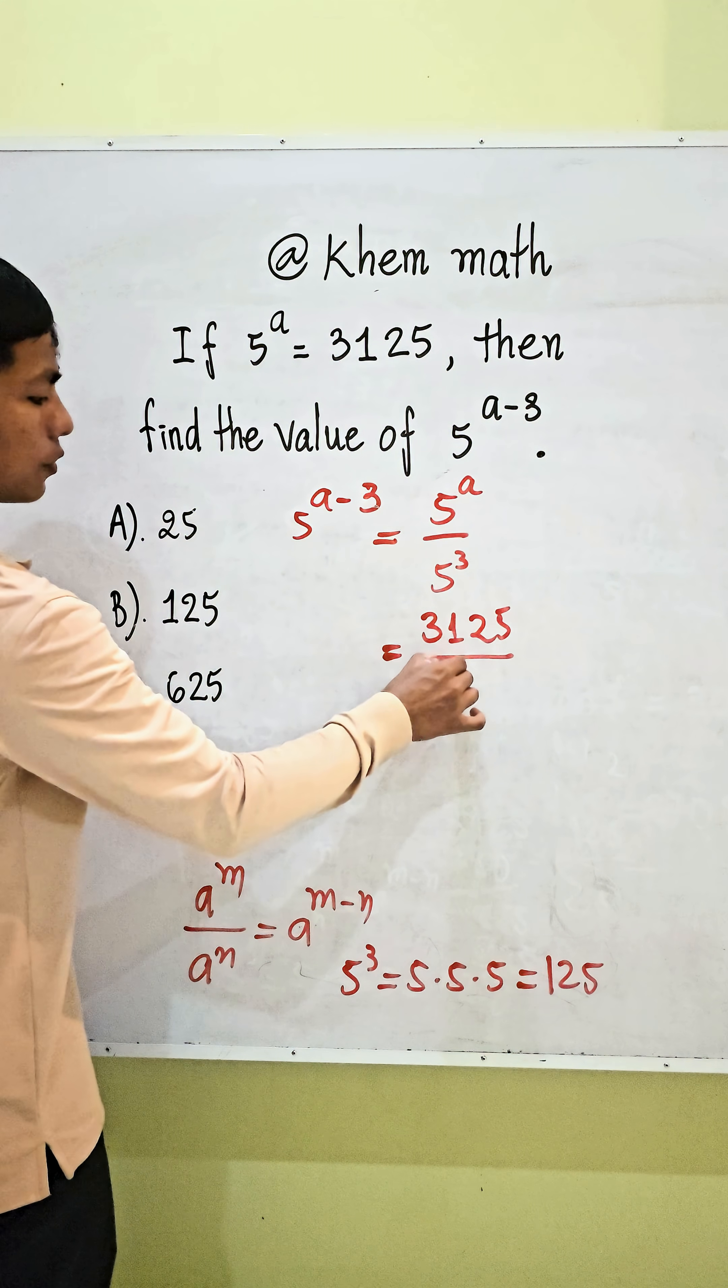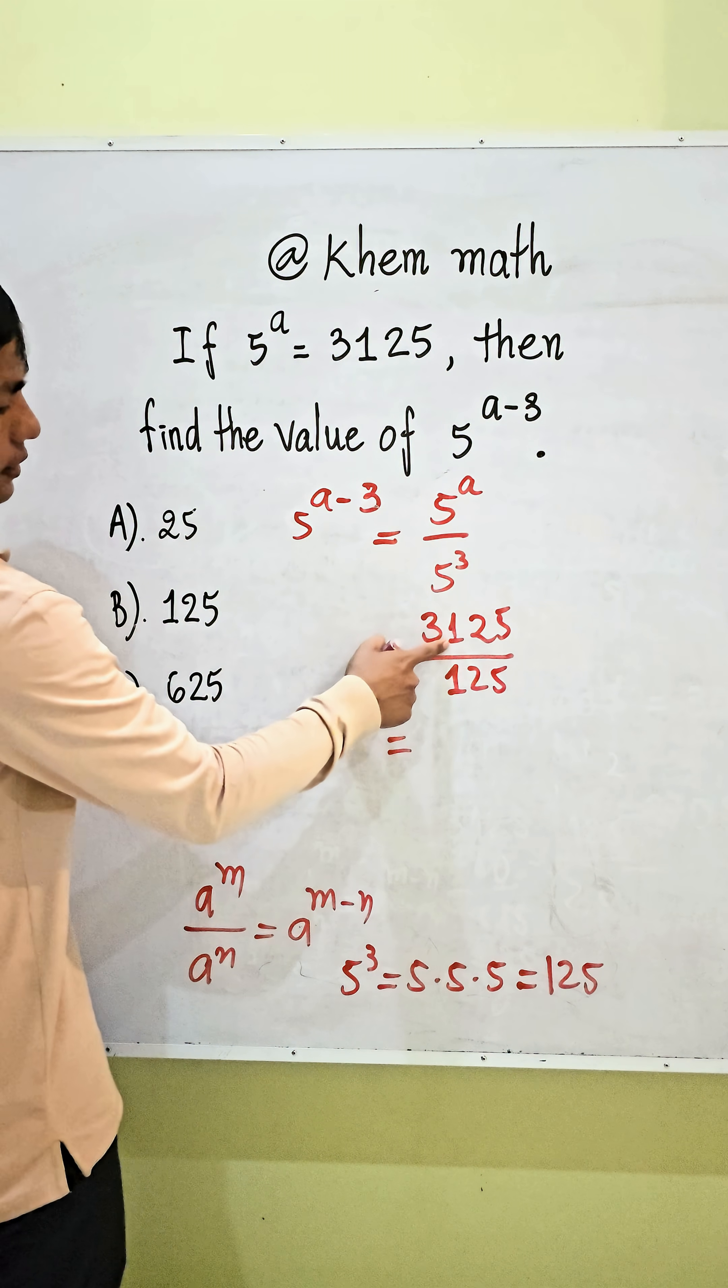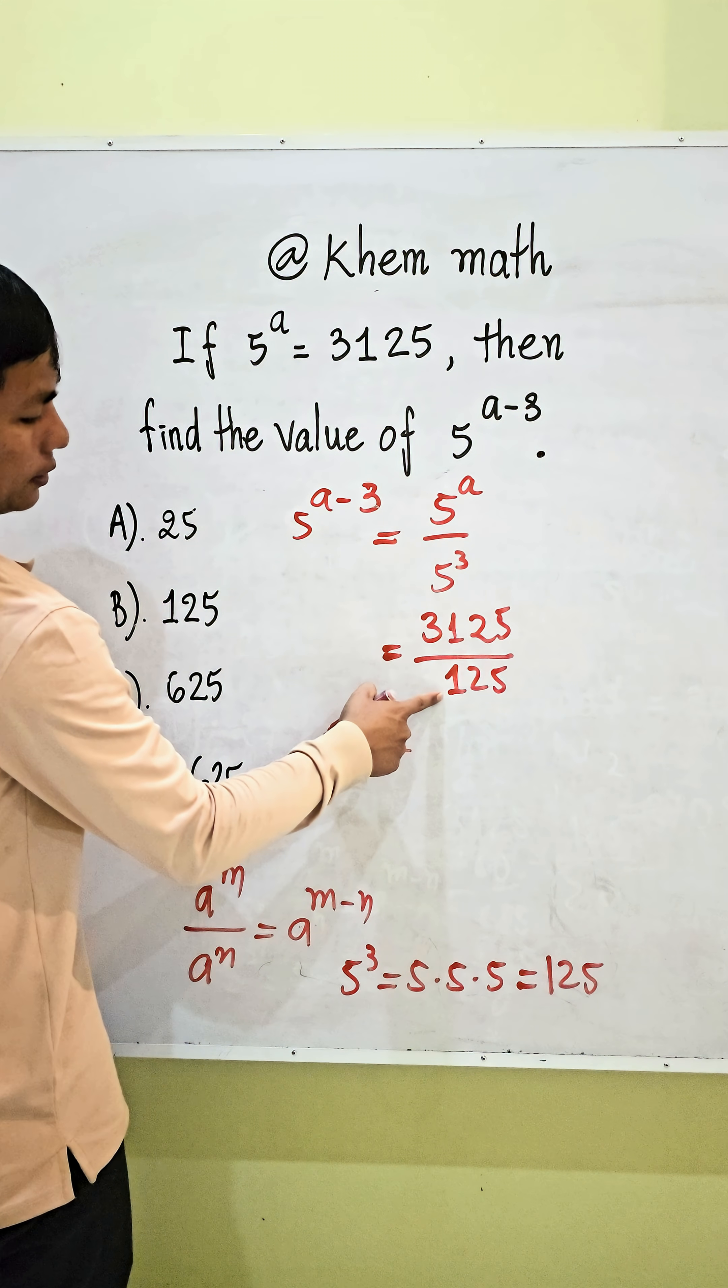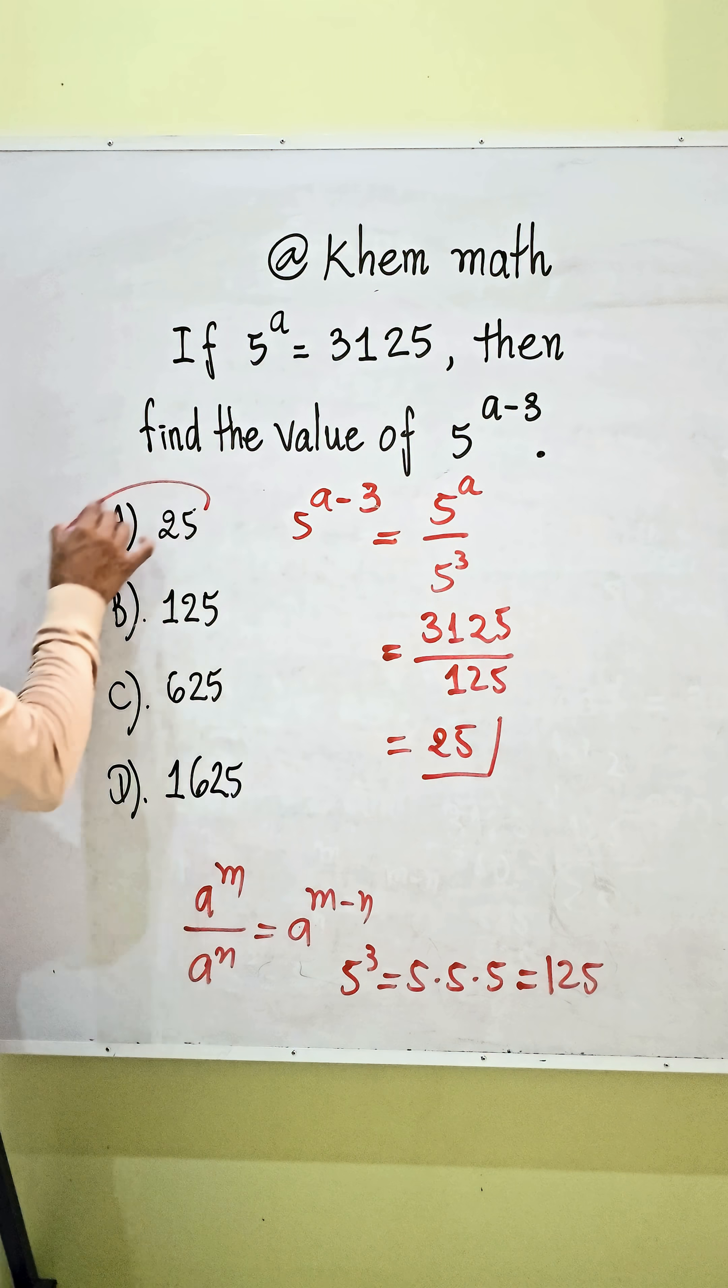So here we get 125. So 3,125 divided by 125 equals 25. So our answer is A.